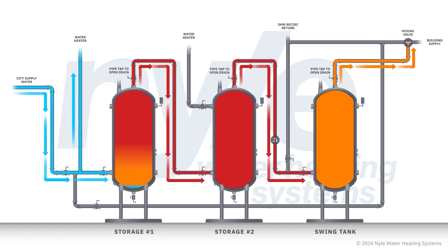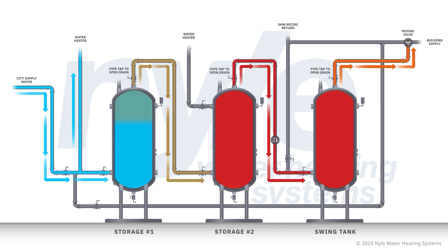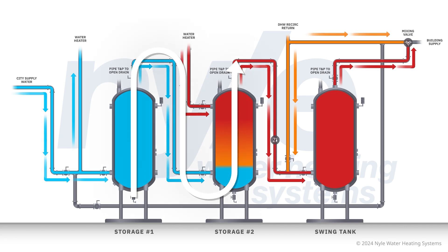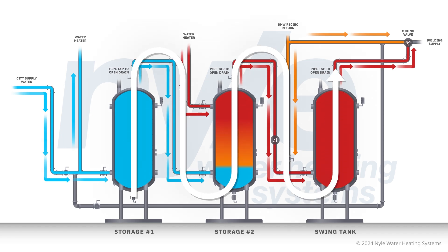Simultaneously, the hot water from the first storage tank flows into the adjacent tank and then into the swing tank. As it continues to the building, this action effectively heats the water in the swing tank. The process flows smoothly from the left tank, through the middle, then to the swing tank, and finally out to the building.